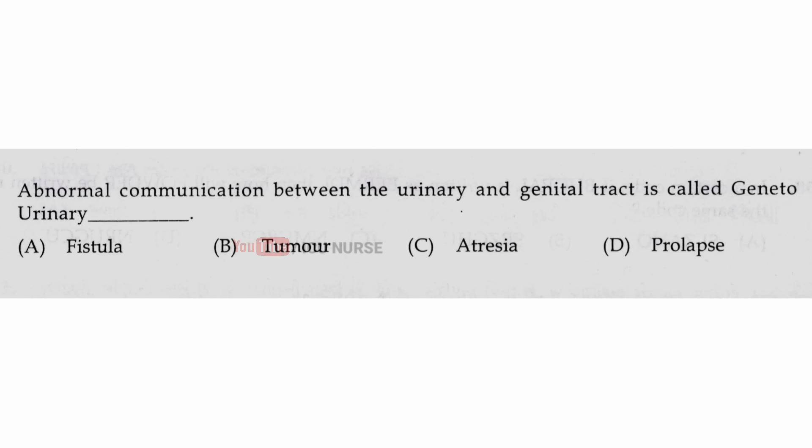Abnormal communication between the urinary and genital tract is called — the correct answer is A — genitourinary fistula.